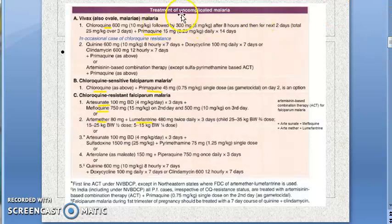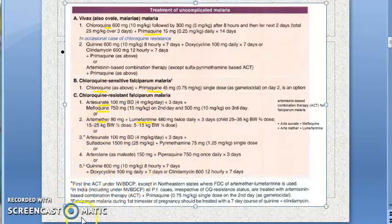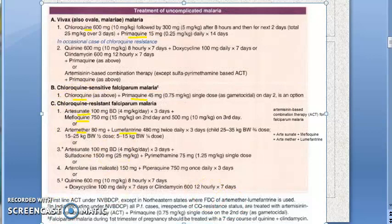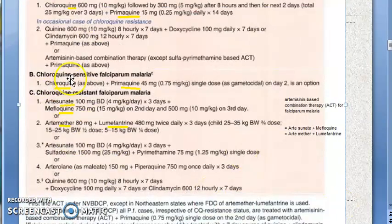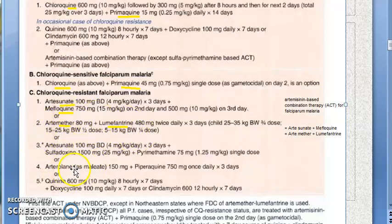These combinations are used when there is chloroquine-resistant falciparum malaria. Since you can't give chloroquine in that case, you will give artesunate plus mefloquine, or artemether plus lumefantrine. Many other combinations exist as well.